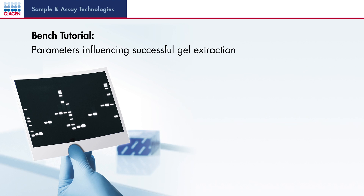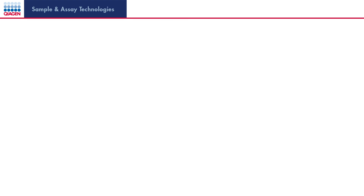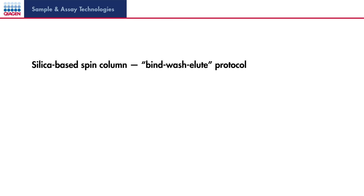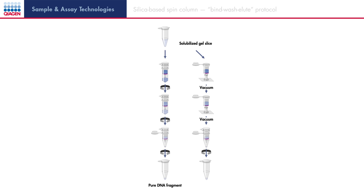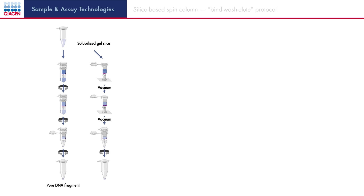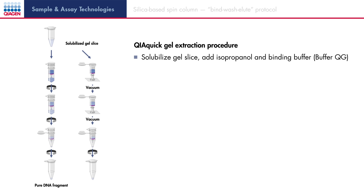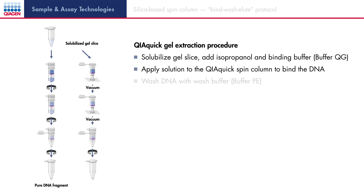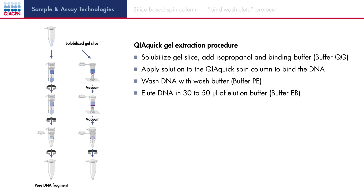Welcome to Qiagen's bench tutorial on the parameters influencing successful gel extraction. Let's take a look at the gel extraction procedure using Qiagen's QIAquick gel extraction kit. After solubilizing the gel slice, isopropanol and binding buffer are added. Adding the solution to the QIAquick column results in binding of DNA fragments to the silica matrix. After washing off impurities and residual salts, the DNA fragments are eluted from the column.